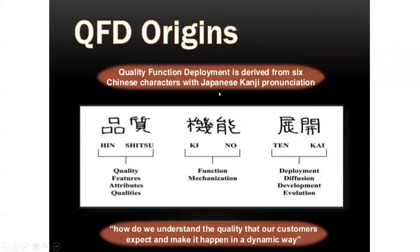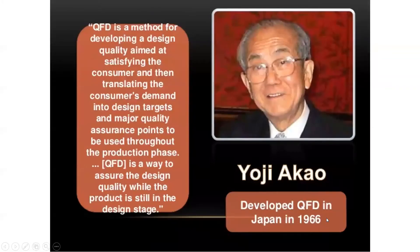The origin comes from Japanese words: quality, function, mechanism, deployment — development and evolution. The key question is: how do we understand the quality that our customer expects and make it happen in a dynamic way? A bit of history — the founder developed QFD in Japan in 1966. It's a method for developing design quality, satisfying the customer, and translating customer demand into design targets. It ensures design quality while the product is still in the design stage.